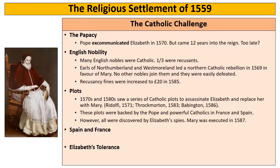There is a series of plots in the 1570s and 80s — the Throckmorton, Babington and Ridolfi plots — potentially dangerous because they involve the Pope, Spain and France. But in reality they're not that dangerous; they're all discovered quite early by Elizabeth's spies. Eventually Mary Queen of Scots herself was executed because of these plots.